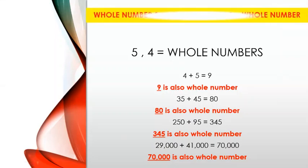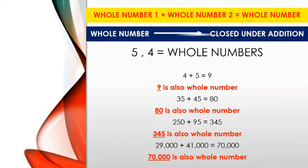So we can say that when we add two whole numbers, we get a whole number. Thus we say that whole numbers are closed under addition. This statement means that when we add any two whole numbers, the result is always a whole number itself.